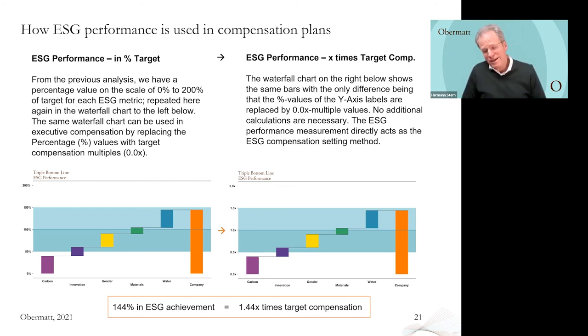The good thing about this achievement chart is you can convert it directly into compensation. The company had 144 percent ESG achievement - you simply change the scale of your vertical axis from percentages to multiples of your target bonus. 100 percent target achievement equals one times target bonus, going up to two times target bonus and starting at zero. Without having to explain in detail how the bonus is calculated, you just change the axis and that's it. ESG achievement of around 144 percent is not that untypical.